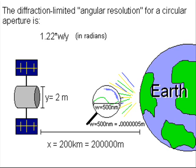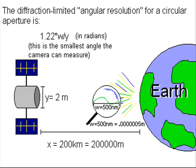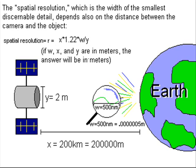The diffraction-limited angular resolution for a circular aperture is 1.22 times the wavelength, divided by the aperture size, in radians. The spatial resolution, which is the width of the smallest discernible detail, depends also on the distance between the camera and the object, which is x in our case.